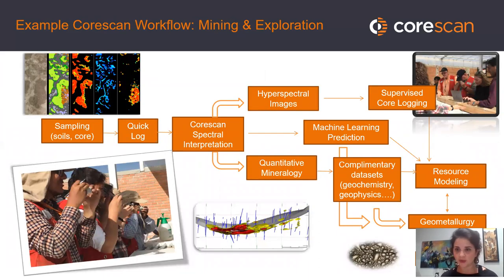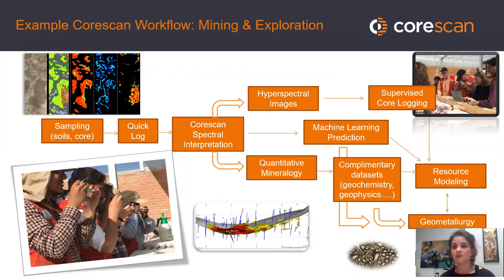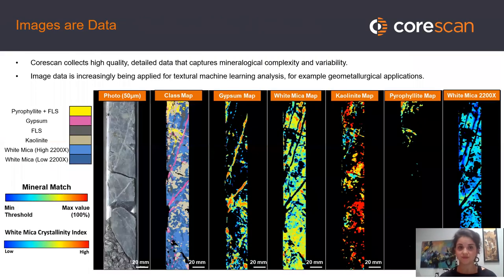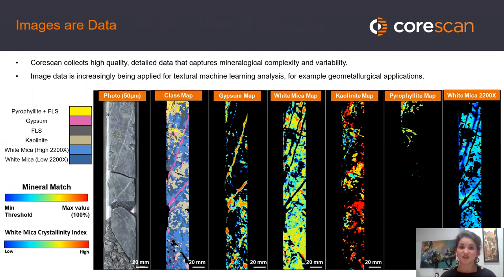An example workflow: you first collect and quick-log your data, then scan the core, perform spectral data interpretation, and use the images for core logging or textural analysis for geometallurgy. You can also use the semi-quantitative mineralogy to integrate with complementary datasets such as chemistry or geophysics, apply machine learning, and improve your existing 3D models. It's also worth noting that images themselves are data — they can be used for textural machine learning analysis very readily.